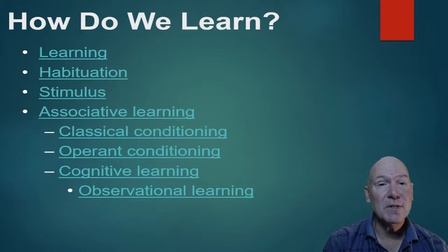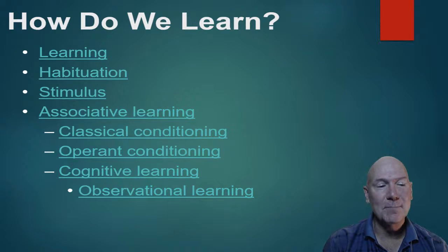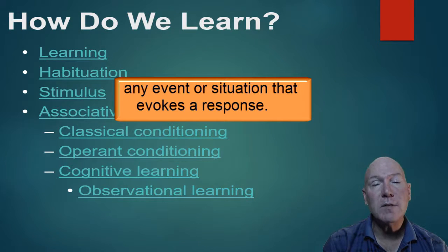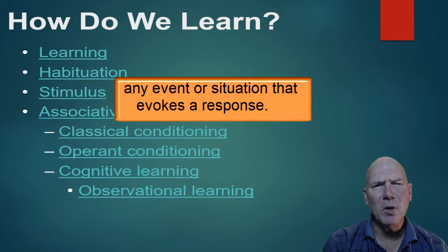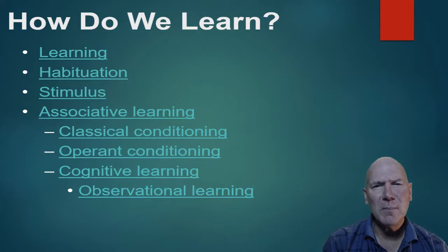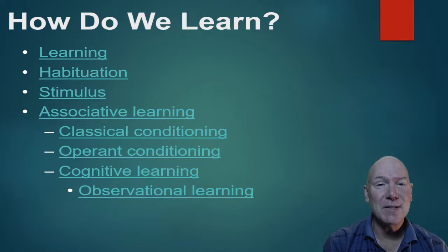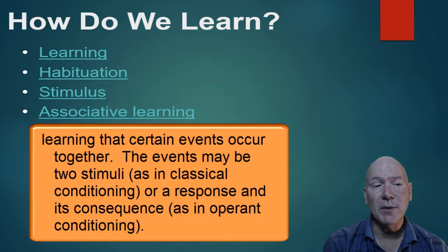Habituation can happen with any stimulus. A stimulus is something that causes a response. For example, if you put your fingers on a hot light bulb and pull them away, the hot light bulb is the stimulus, and pulling your hand away is the reaction — the response. That's the stimulus-response relationship. We're going to first look at associative learning.